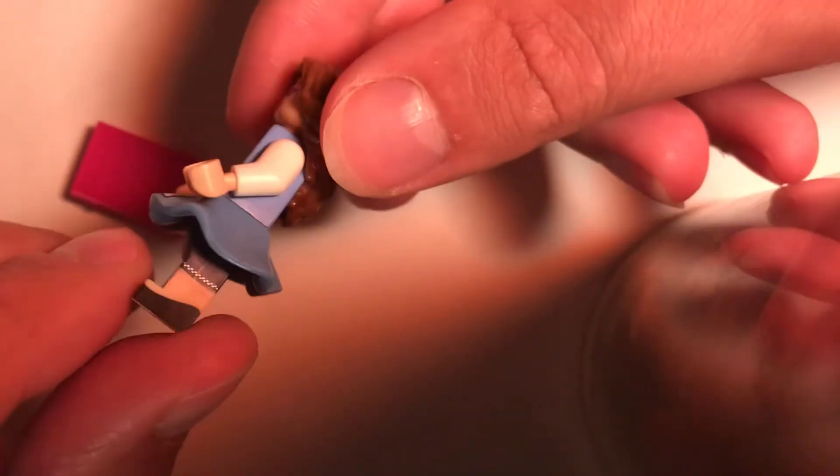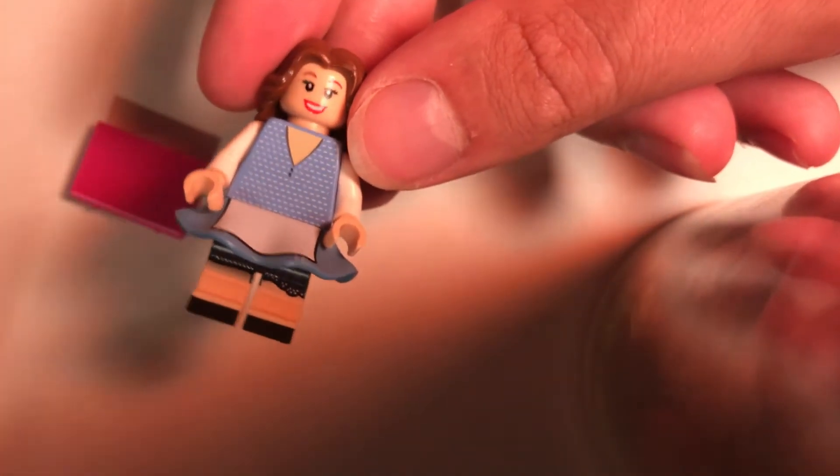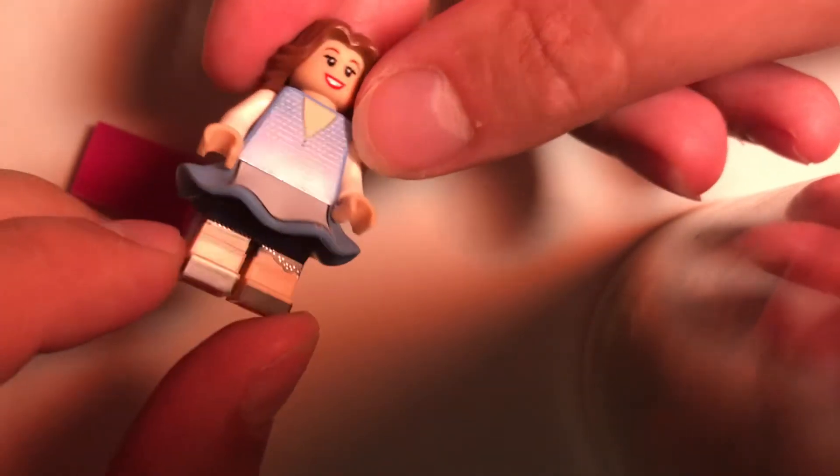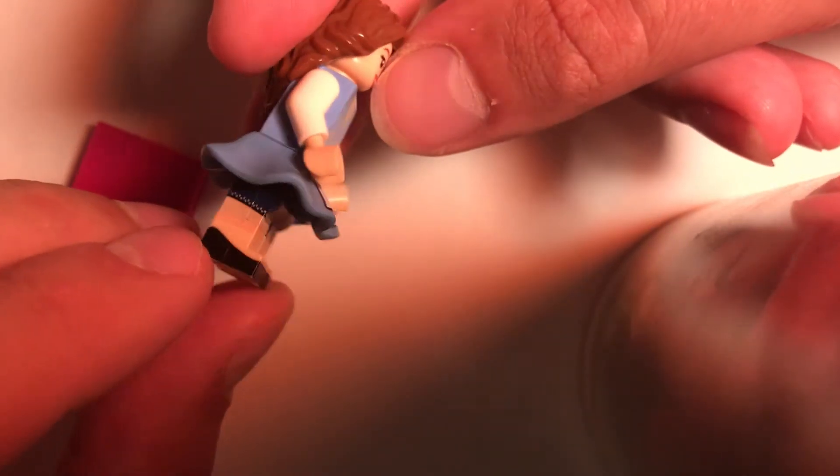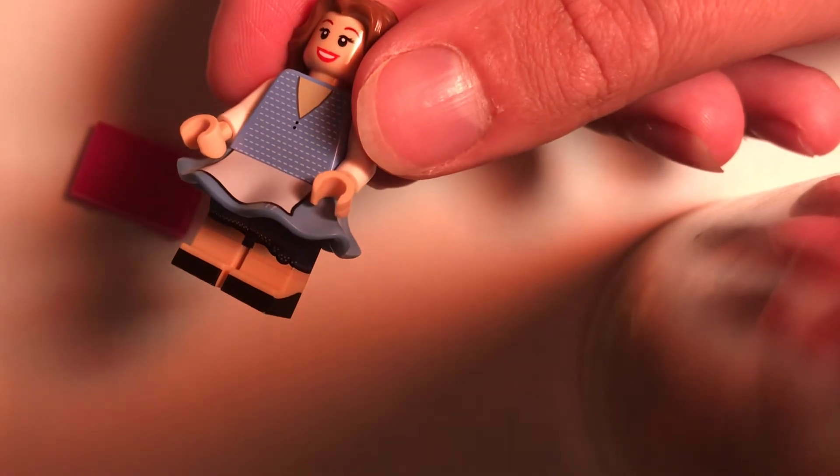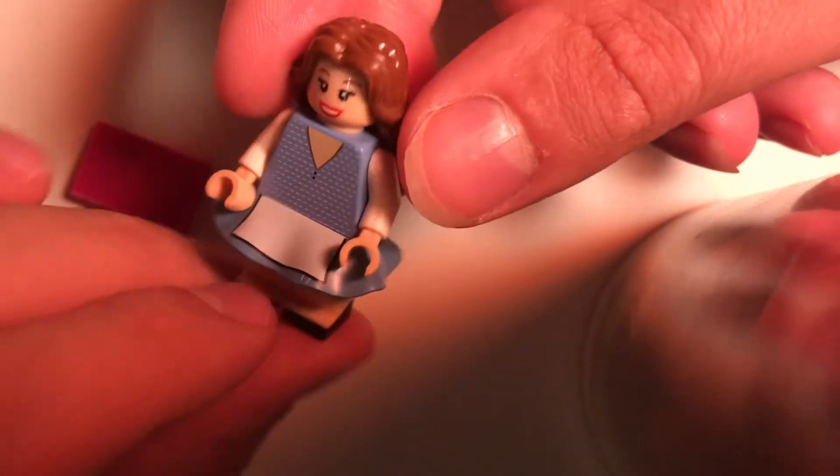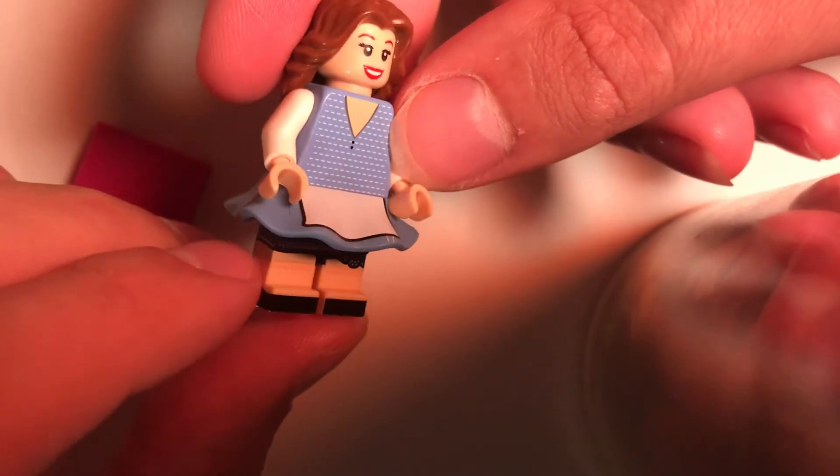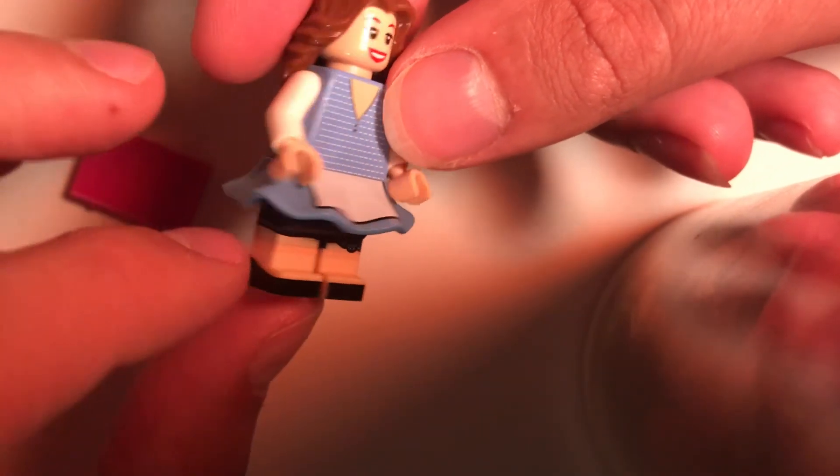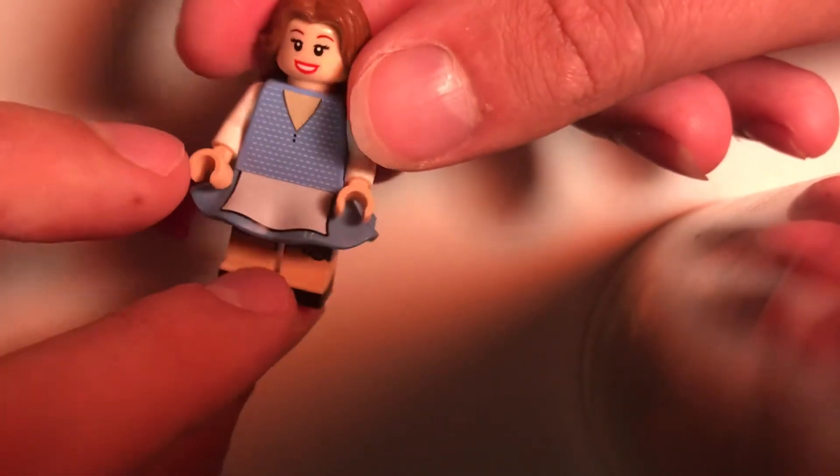The legs are from Queenie Goldstein, which is also from the Harry Potter Series 1 CMF series. I like these because it has the little fancy shoes, and Belle has her fancy shoes, and I think it works well. And I know you can kind of, and she has like the bare legs, like bare knees in the cartoon, so you can't really like see any other details. They're just like plain, plain tan legs.